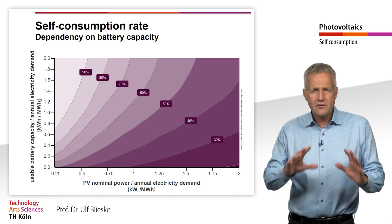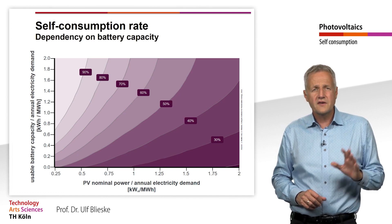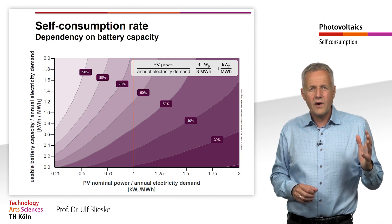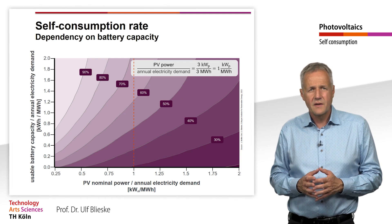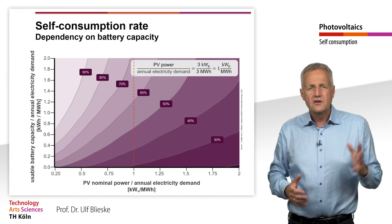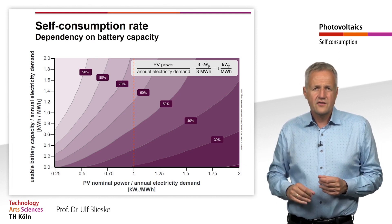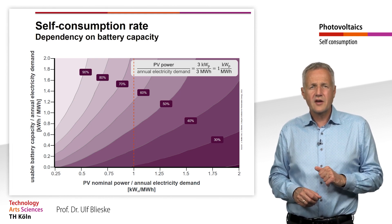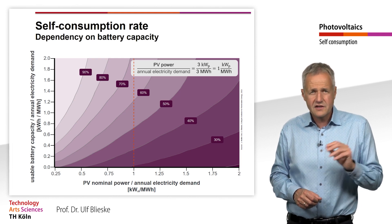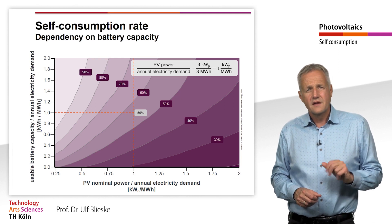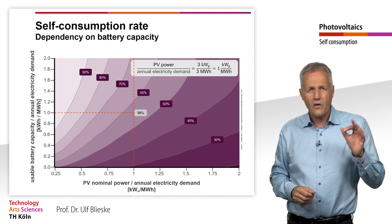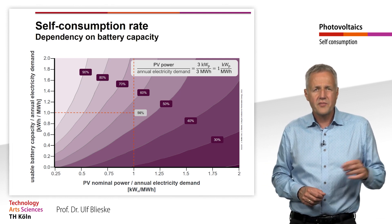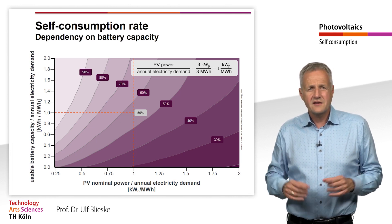Both values have been normalized to the annual electricity demand. For example, if a household with an annual electricity demand of 3000 kWh installs a PV system with a capacity of 3 kW peak, this corresponds to a capacity of 1 kW peak per MWh of electricity consumption. With this system size, a single-family household without battery storage could achieve a self-consumption rate of just under 30%. If a battery storage system with a usable capacity of 3 kWh is installed — corresponding to 1 kWh per MWh — the self-consumption rate could be increased to over 50%. However, a further increase in storage capacity would increase the self-consumption rate only slightly, since a larger battery is not fully discharged during the night and its capacity is therefore not fully used.